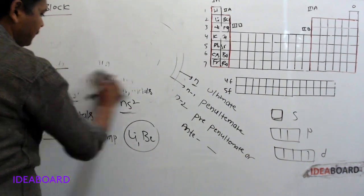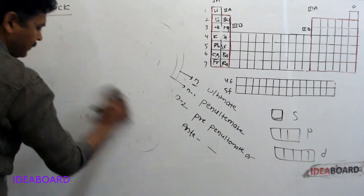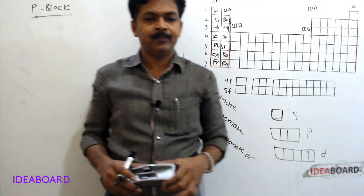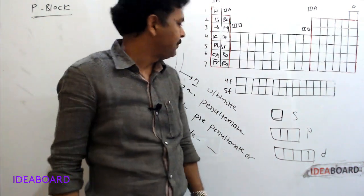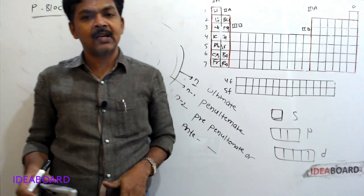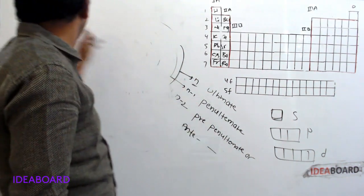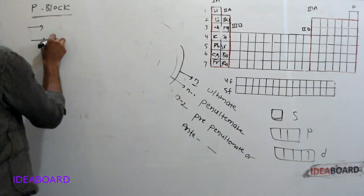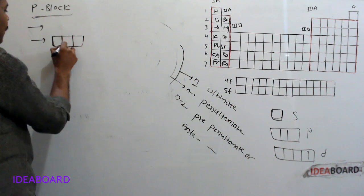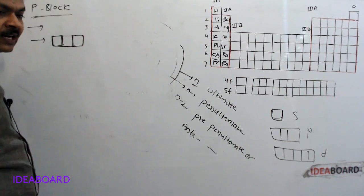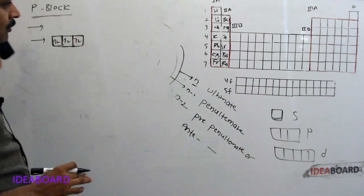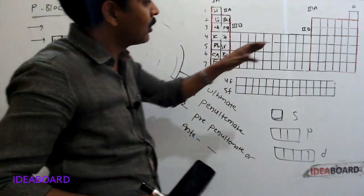Next, P block elements. P block elements are those in which the differentiating electron enters into the P orbitals of the valence orbit. The P subshell contains three orbitals, and each orbital can accommodate 2 electrons, so the P subshell can accommodate 6 electrons. That is why P block contains 6 groups.